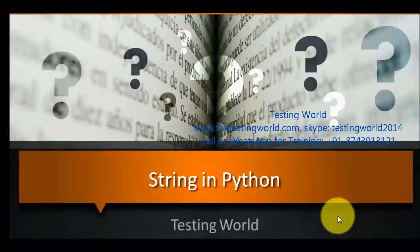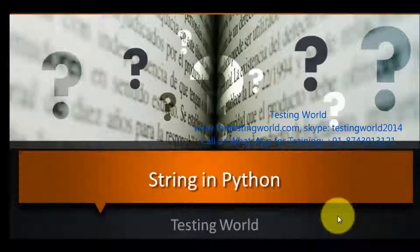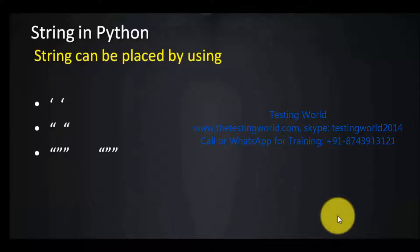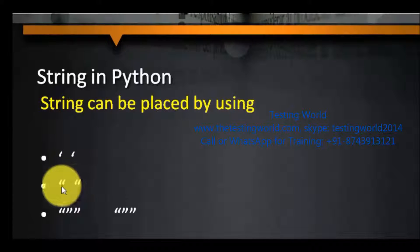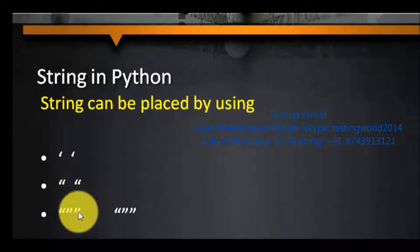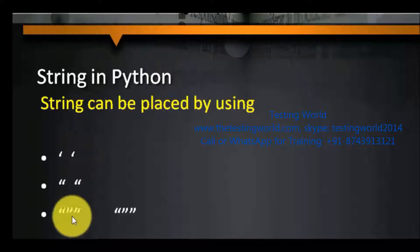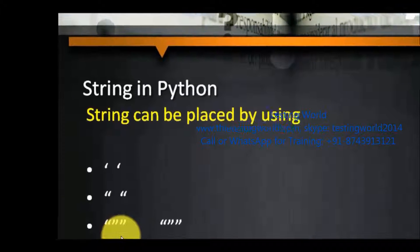Welcome to the testing world. In this session, we are going to cover string. String in Python can be placed by using either single quote, double quotes, or we can use three-time quotes. We are going to understand the difference between these three types of declaration of string.